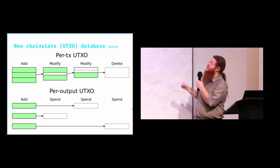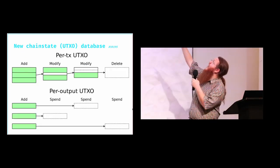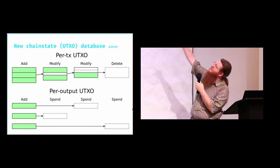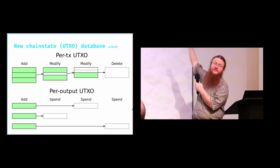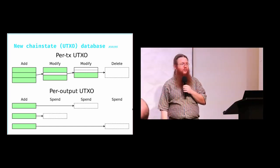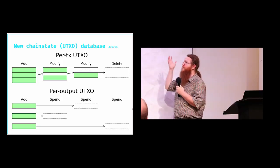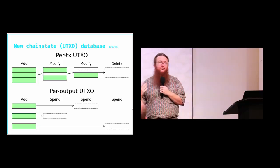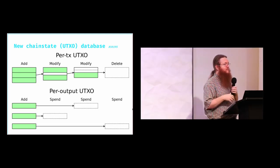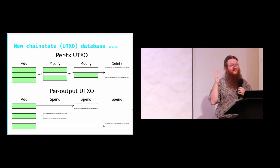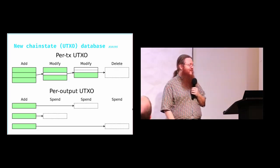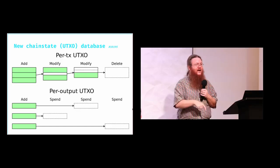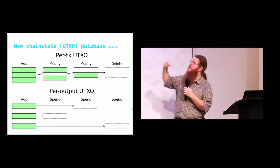Here's a visualization of the change. In the old format you have an add, modify, modify operation: you have three outputs to begin with, one gets spent, another gets spent, and then you delete the rest. The new format is maybe what people thought it was actually doing all along. This same structure has been copied into other alternative implementations — BTCD, BCAT, and others — and those implementations all also work like the old format.